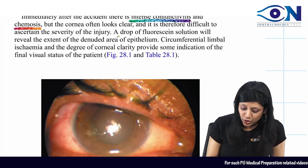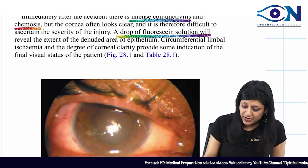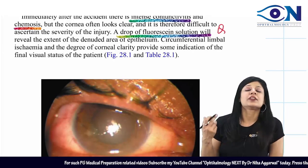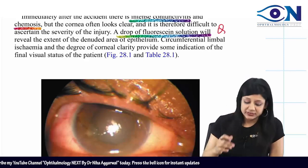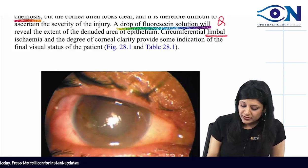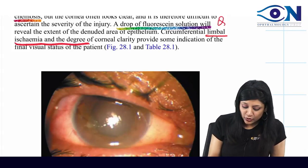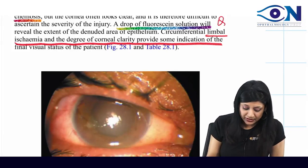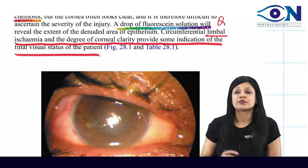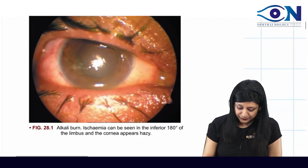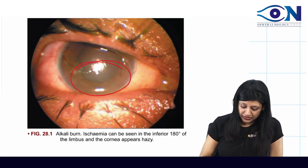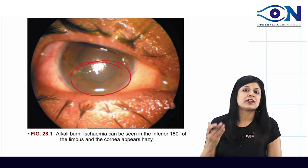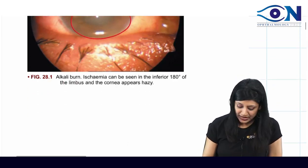To assess damage, use a drop of fluorescein stain to highlight the denuded area and corneal epithelial ulcer. You will observe limbal ischemia, and the degree of corneal clarity provides some indication of the final visual status. In alkali burns, ischemia may be seen in the inferior 180 degrees and the cornea appears hazy.